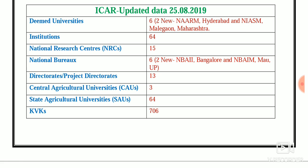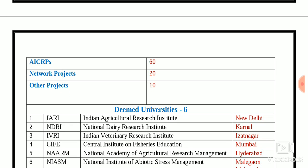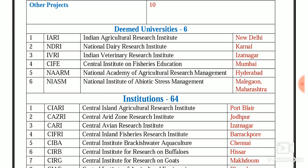As per updated data: deemed universities — 6 (2 newly added: NAARM, Hyderabad and NISM, Malegaon, Maharashtra); institutions — 64; National Research Centers and Project Directorates — 15; National Bureaus — 6 (2 new: NBAII, Bangalore and NBAIM, MAU-UP); directorates or project directorates — 13; Central Agriculture Universities (CAUs) — 3; State Agriculture Universities (SAUs) — 64; KVKs — 706; AICRPs — 60; network projects — 20; other projects — 10.